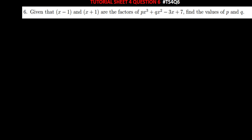Hi everyone, welcome to today's tutorial. We're looking at question 6 from tutorial sheet 4. The question says: given that x minus 1 and x plus 1 are factors of px cubed plus qx squared minus 3x plus 7, find the values of p and q.